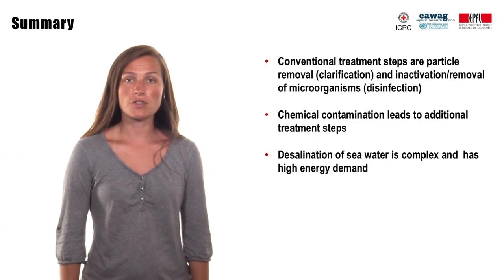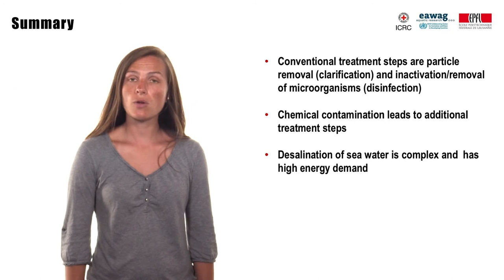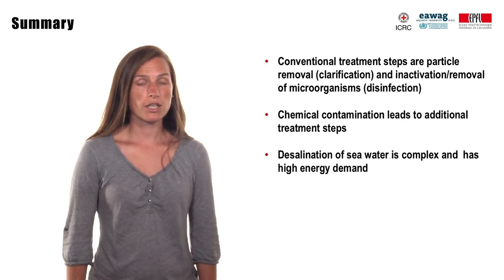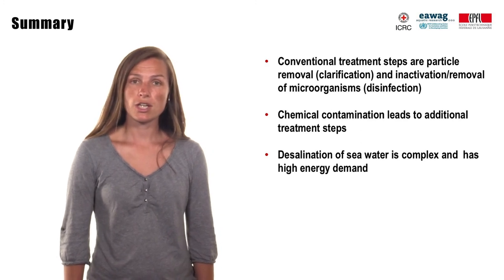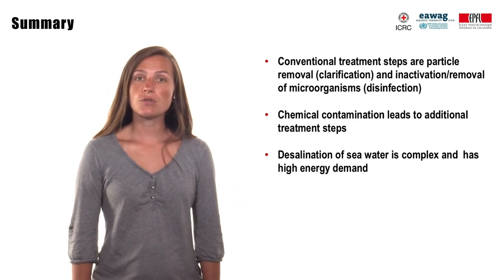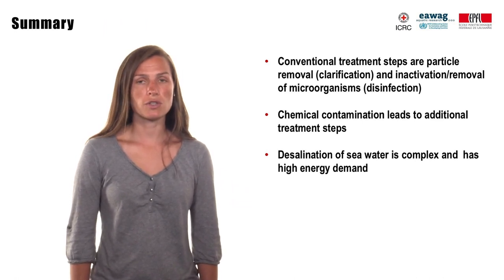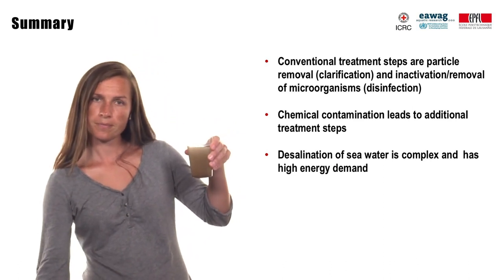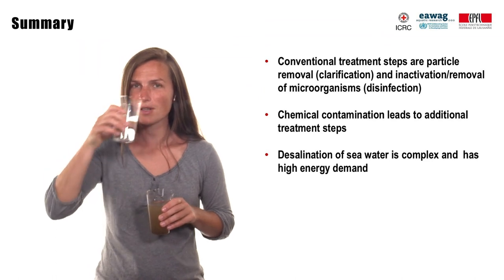There is a large variety of different treatment technologies, and some are still in development with few promising systems existing only as pilot plants. In this course we considered major conventional drinking water treatment steps, which include clarification and disinfection. Disinfection is not efficient if water is turbid, so clarification must be done first. Geogenic and anthropogenic contamination requires special additional treatment steps, adding complexity to the system. Desalination of seawater is complex, has high energy demand, and is often only appropriate where no other water sources are available. So, we have clarified and disinfected this water — now it looks like this. There is even chlorine inside. Let's drink it.